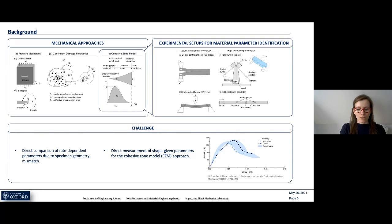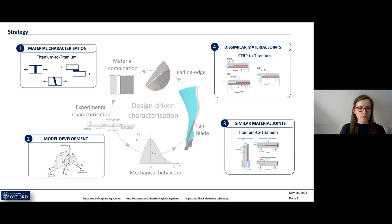This research addresses those challenges with the overall objective to contribute to a more reliable failure prediction of multi-material adhesive joints. First, the adhesive interface material is characterized using titanium-to-titanium adhesive joints. This information is then used to develop the material model, which is subsequently used to predict failure of larger-scale fracture mechanics specimens in titanium-to-titanium adhesive joints. Once validated, the methodology is extended to dissimilar material joints in the form of composite-to-titanium combinations.